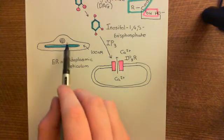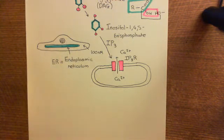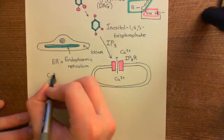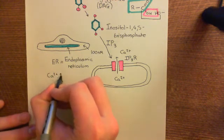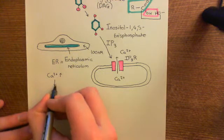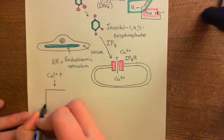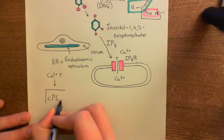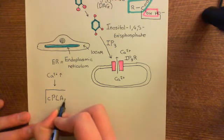Now what we want to see is what this rise in calcium in the cytoplasm of the cell is actually going to cause. One of the targets for the calcium is the enzyme known as cellular phospholipase A2, often abbreviated as cPLA2.